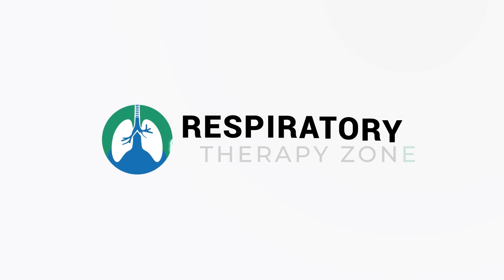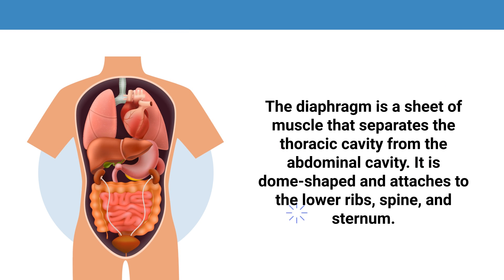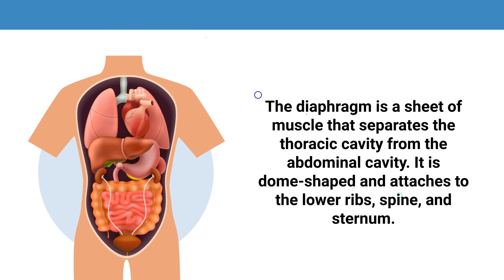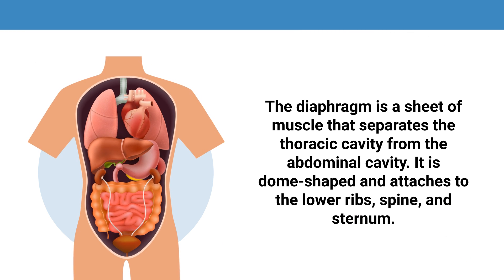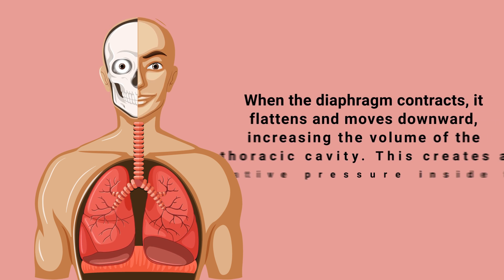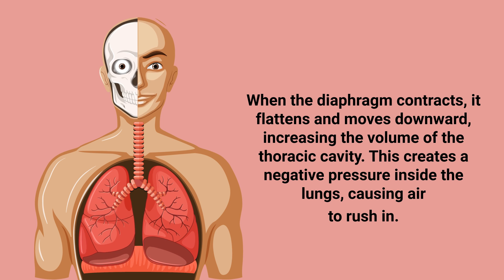The diaphragm is a sheet of muscle that separates the thoracic cavity from the abdominal cavity. It is dome-shaped and attaches to the lower ribs, spine, and sternum. When the diaphragm contracts, it flattens and moves downward, increasing the volume of the thoracic cavity. This creates a negative pressure inside the lungs, causing air to rush in.